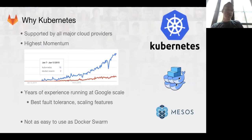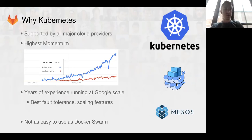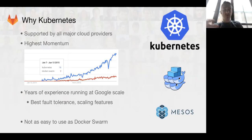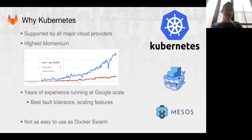So why Kubernetes? Why have we chosen this as the first platform to support when developing new features? Well, number one, it's supported by all major cloud providers — Amazon, Google, Azure — they all have a container engine. But it also has the highest momentum. This chart from Google Trends shows search popularity, and you can see Kubernetes is far ahead of Docker Swarm, which is sort of number two. This trend is not unique — if you look at job postings, Stack Overflow questions, the same general trend applies. Kubernetes just has a different trajectory from Docker Swarm.